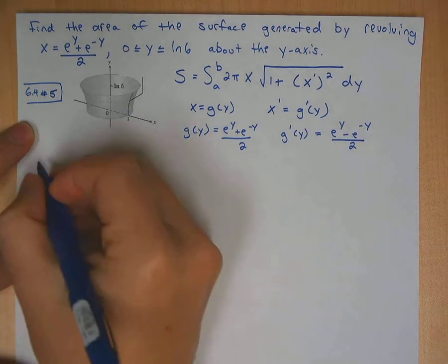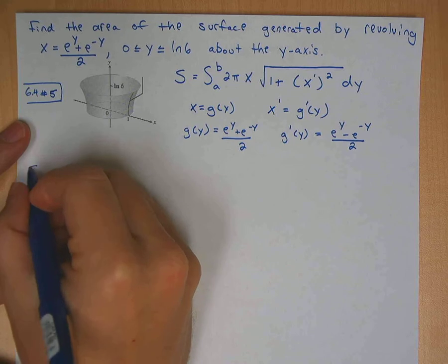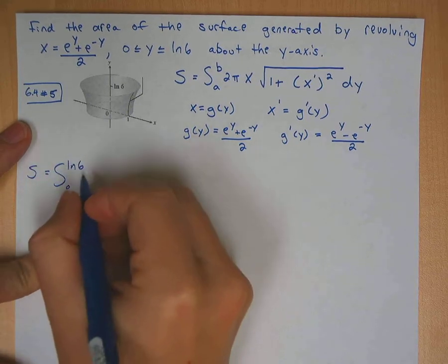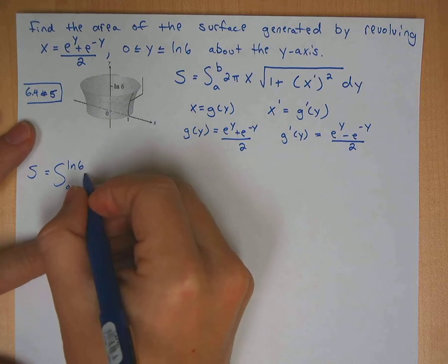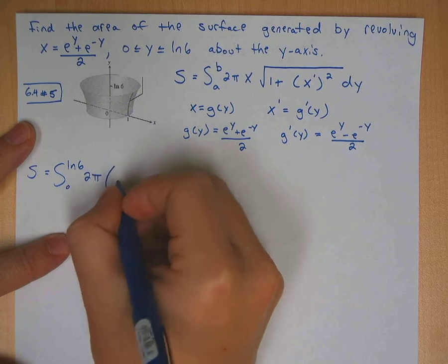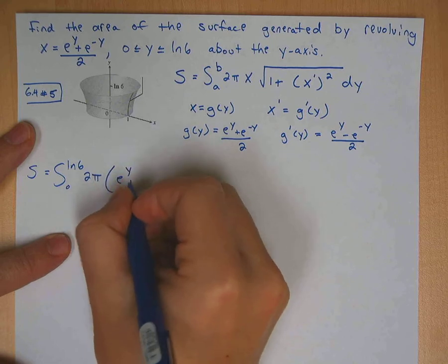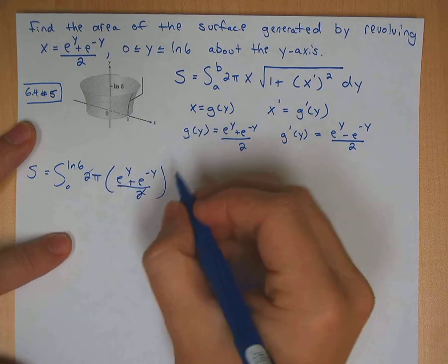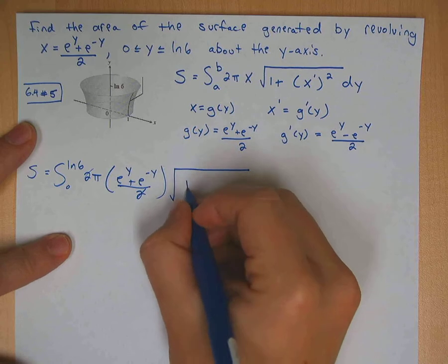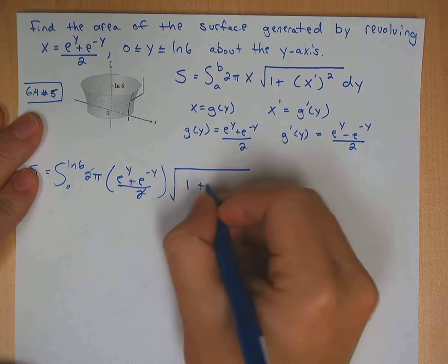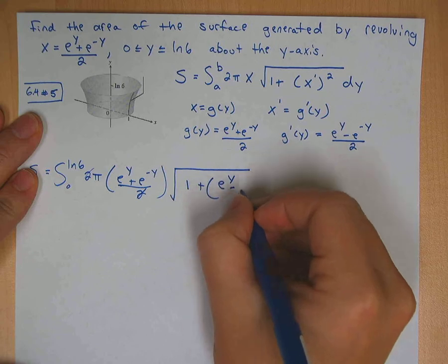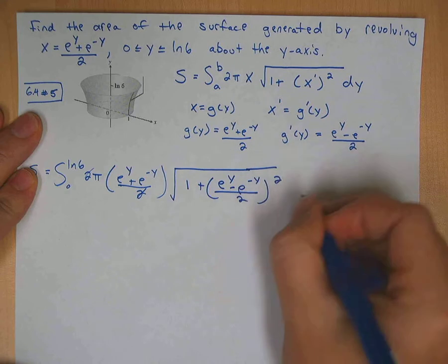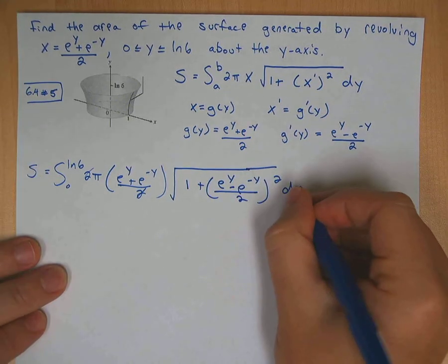Okay, so let's put it in. So our surface area would be the integral 0 to ln of 6 of 2π times e to the y plus e to the negative y over 2. Of course, that would cancel right there. And then we have 1 plus e to the y minus e to the negative y over 2 squared dy.